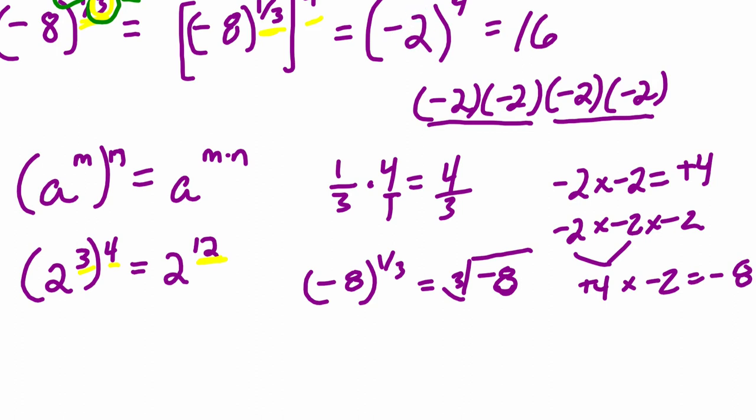And some of the things that came up here are we have x to the 1 over n. In our case, we had negative 8 to the 1 third, which is the third root. But any number to the 1 over n power equals the nth root of that number.